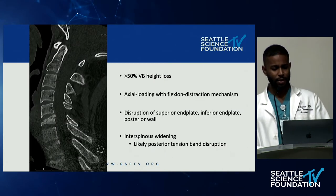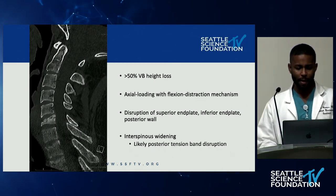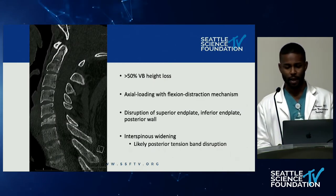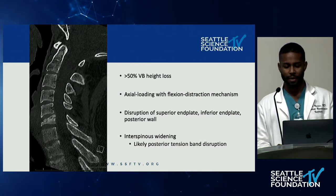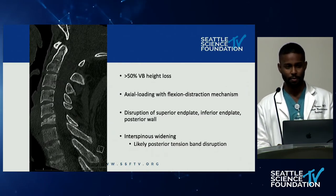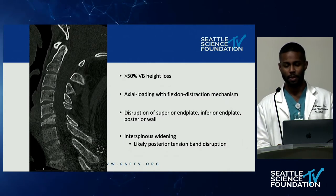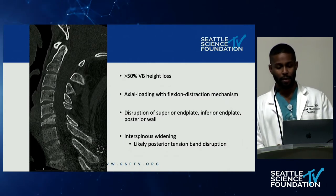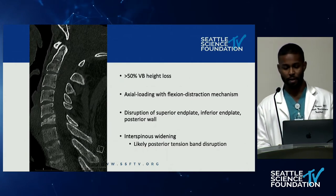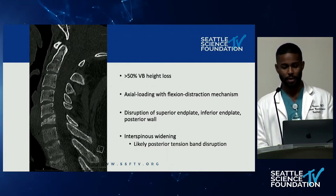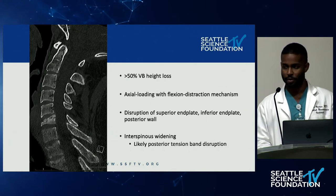Here we have a sagittal CT in the midline. He has greater than 50% vertebral body height loss. You can see by the morphology of the anterior column that this is an axial loading with flexion distraction injury mechanism, which makes sense with the shallow diving injury. We see disruption of the superior end plate, inferior end plate, and the posterior wall, as well as quite significant interspinous widening, suggestive of likely posterior tension band disruption.